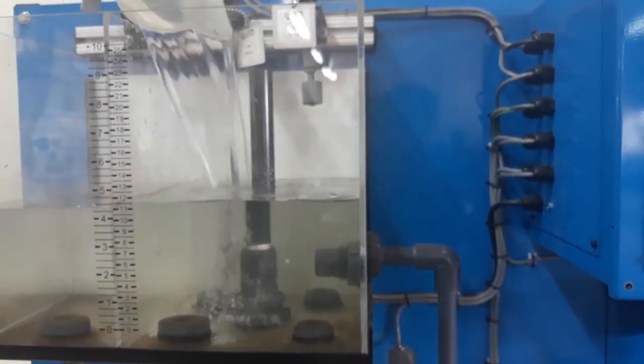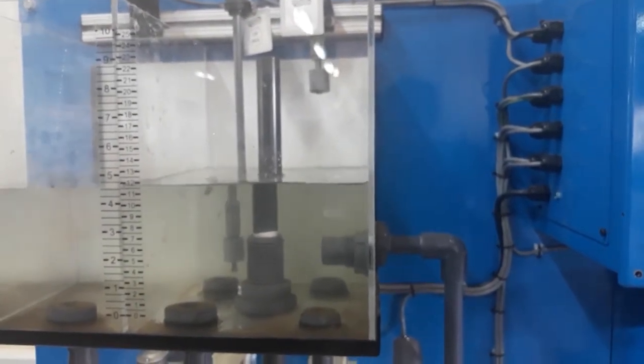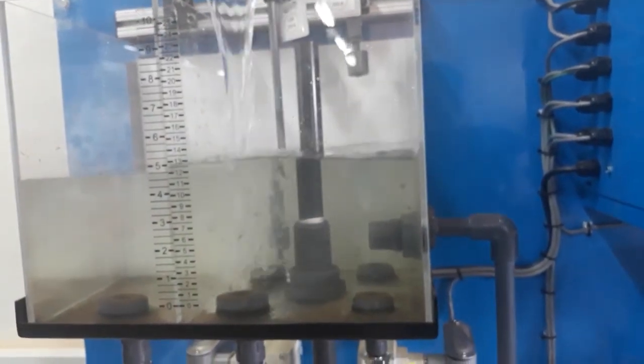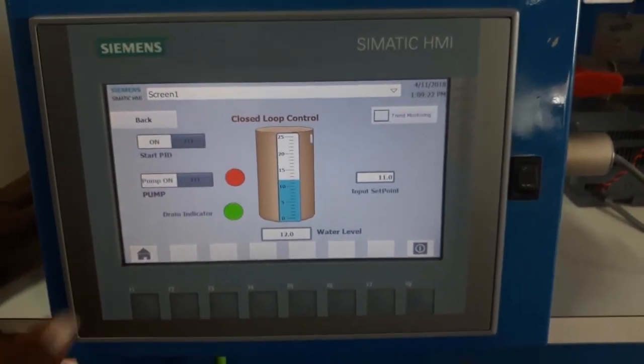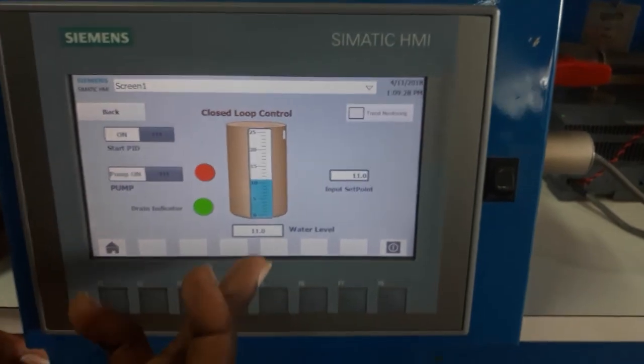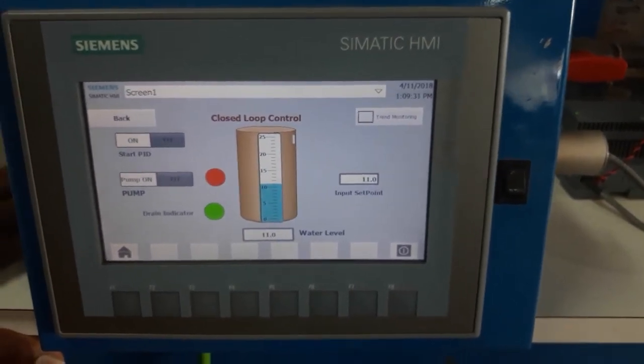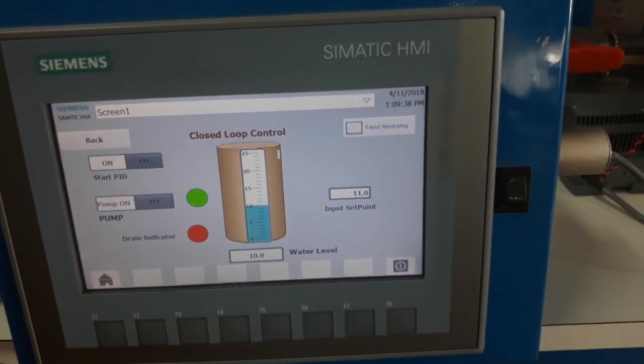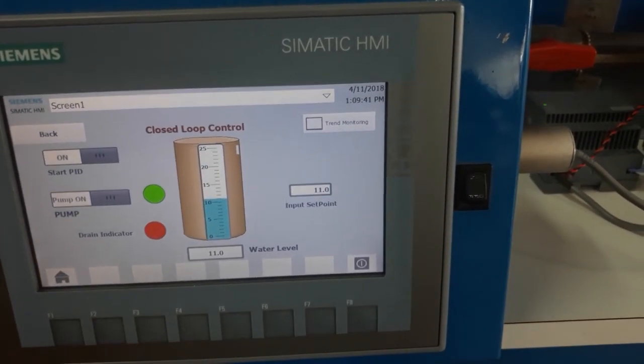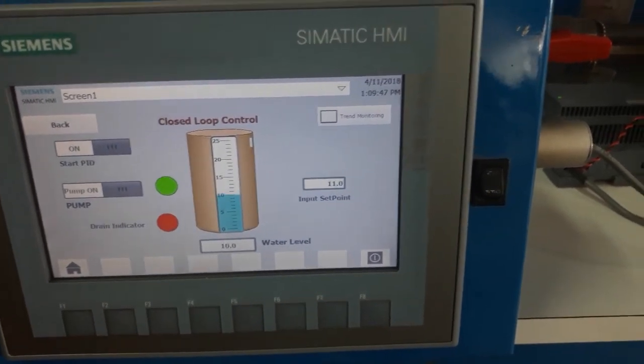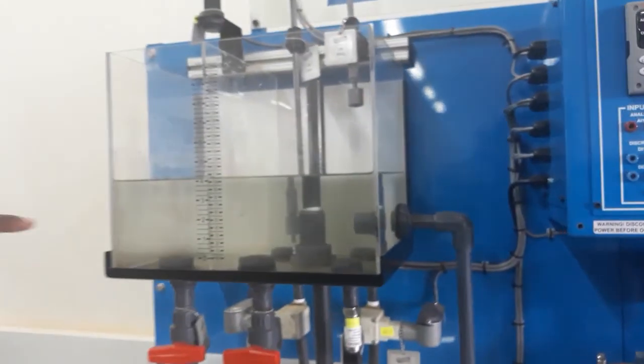Now, you remember that the setpoint is still at 11. We are trying to see the behavior of the system. As you can see now, the sound which was emitting from the motor is off, and the drain indicator is green, indicating that the system has detected that the water level has surpassed the setpoint by the predetermined value, and it is trying to reduce the water level to the original setpoint, which it has successfully achieved, and the motor has just come on right now, since the setpoint has been achieved.